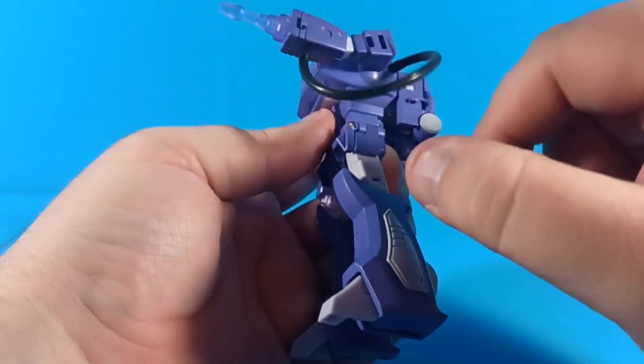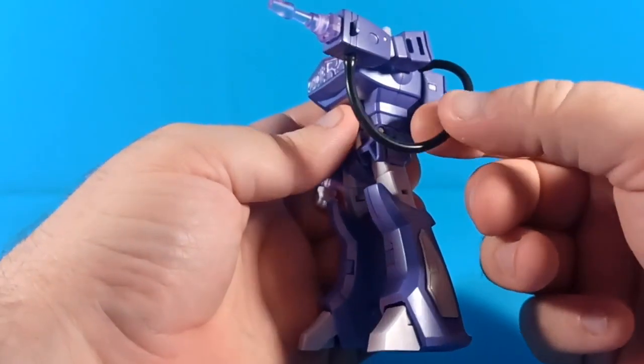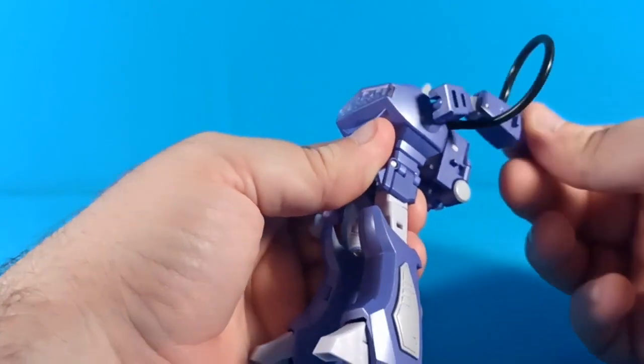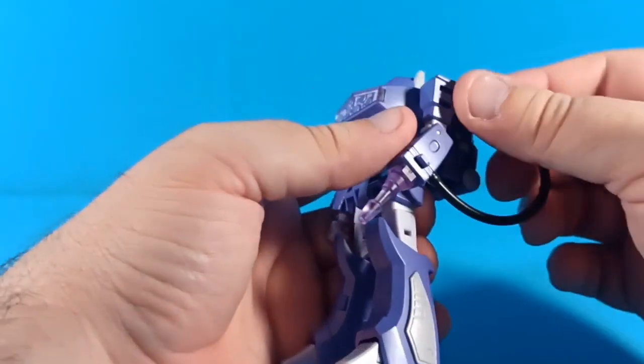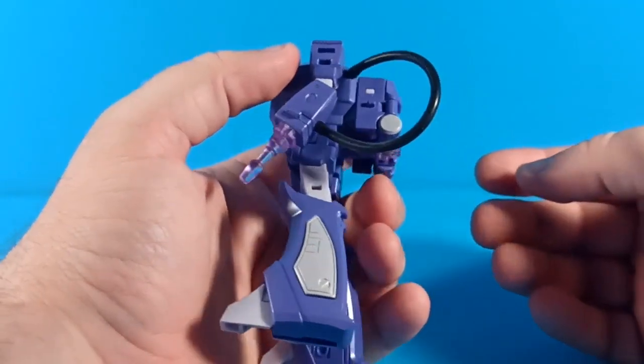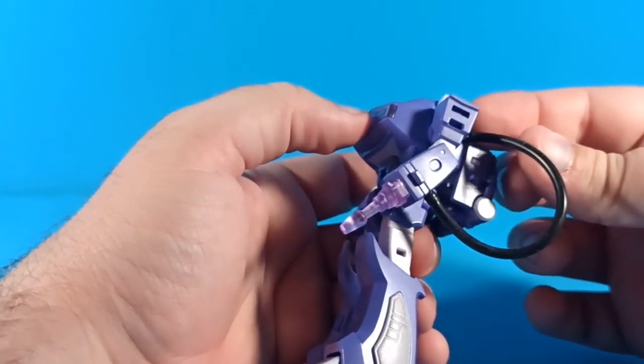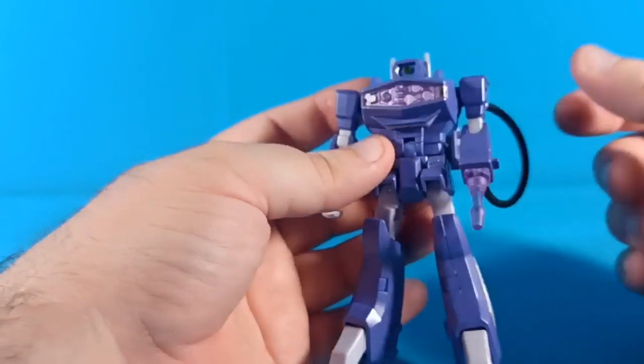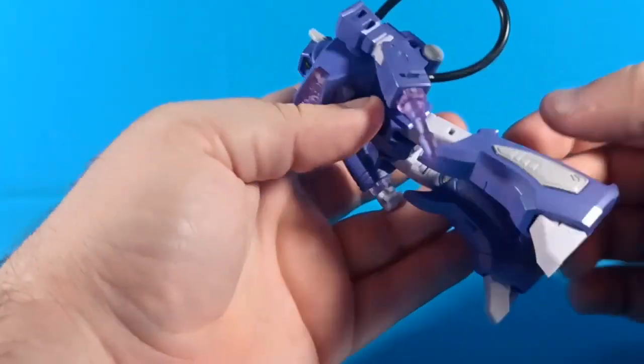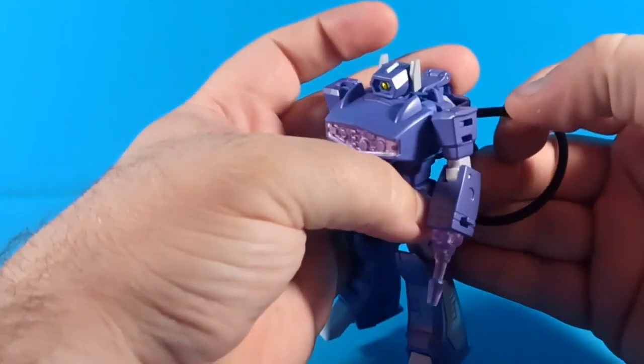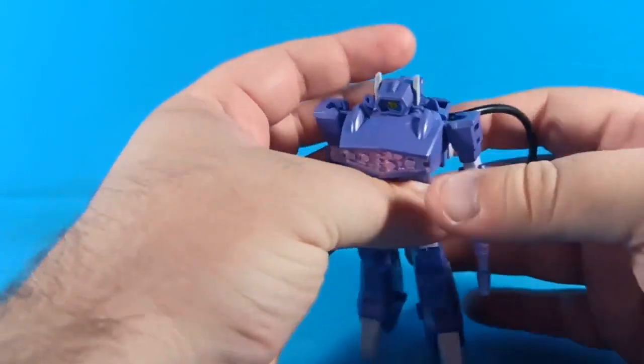He also comes with this little rubber hose end thing, which I feel his rubber hose is a little long. I've been debating whether or not I want to shorten it up by about maybe half an inch maybe. It fits on really well, it has not come loose in the slightest since I put it on and I've played with this guy a lot.